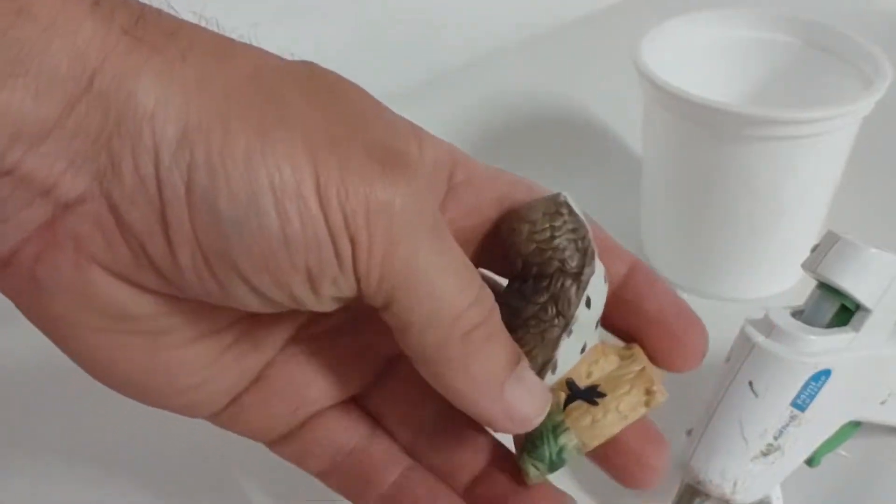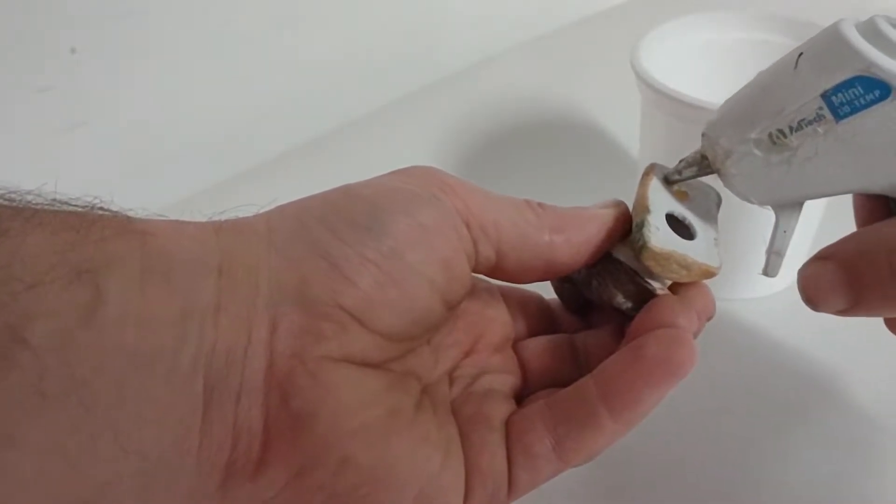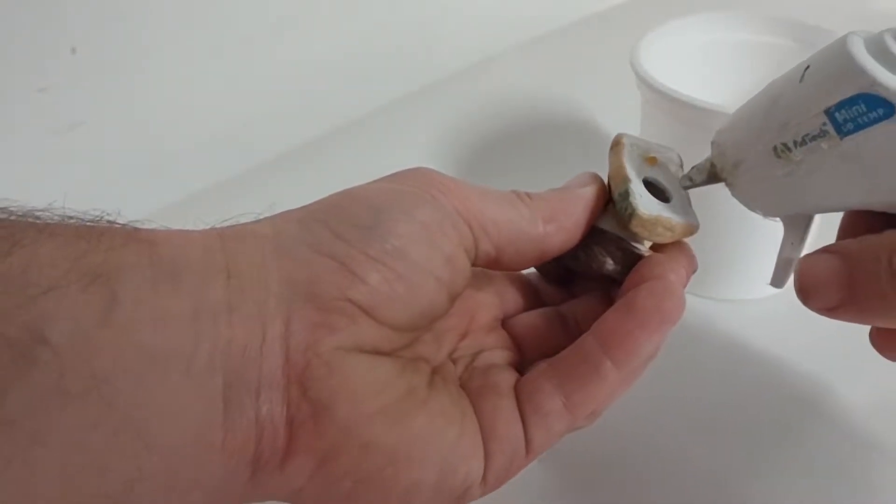So we are using a little ceramic owl as our original casting and we are going to hot glue it to the bottom of a plastic container.